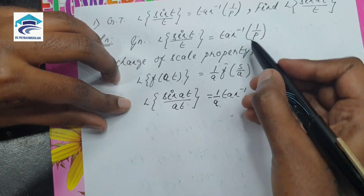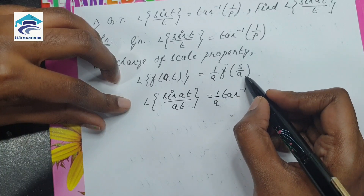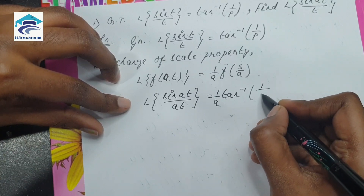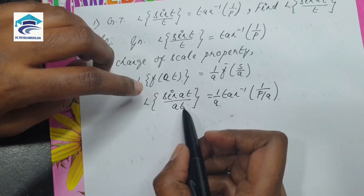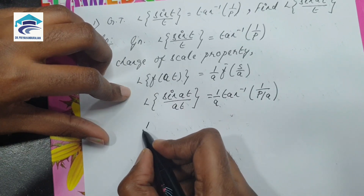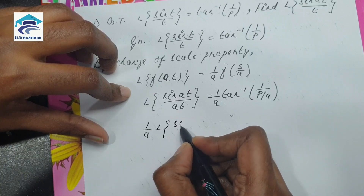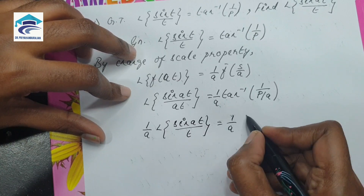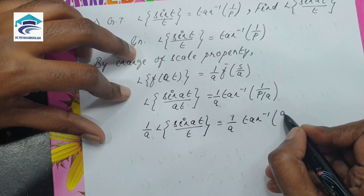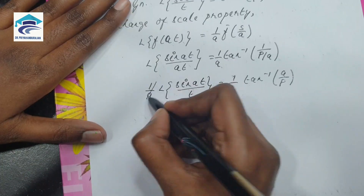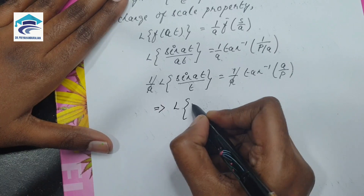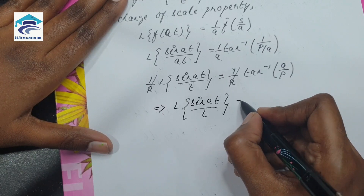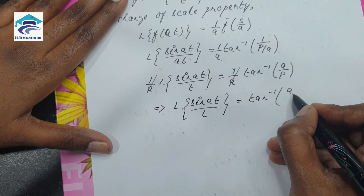F̄(s/a) is tan inverse of 1/(p/a), which equals tan inverse of a/p. Moving to the left hand side, we can take the constant, so this becomes (1/a) times L of sin(at)/t, which equals (1/a) times tan inverse of a/p. Cancelling the 1/a on both sides, this implies L of sin(at)/t is equal to tan inverse of a/p.